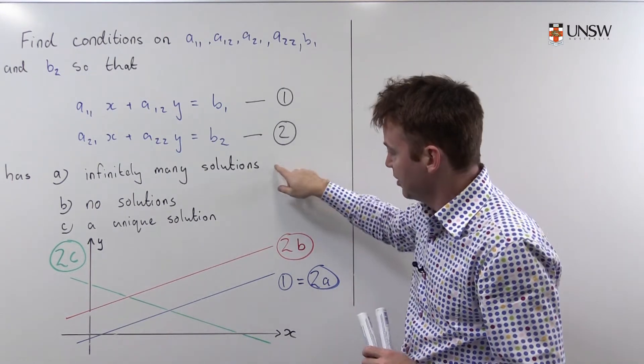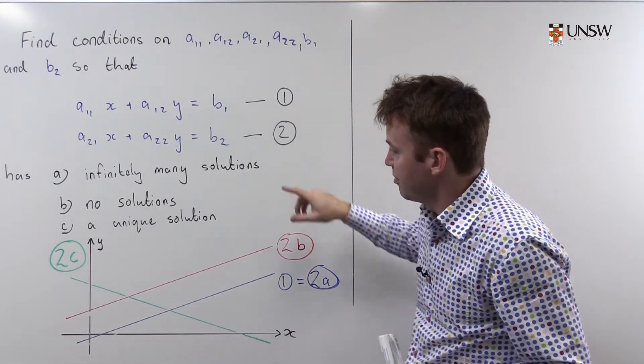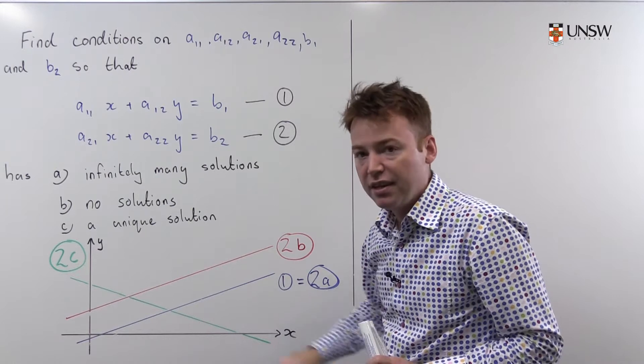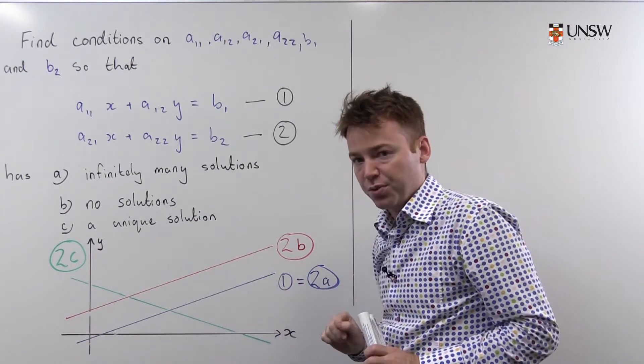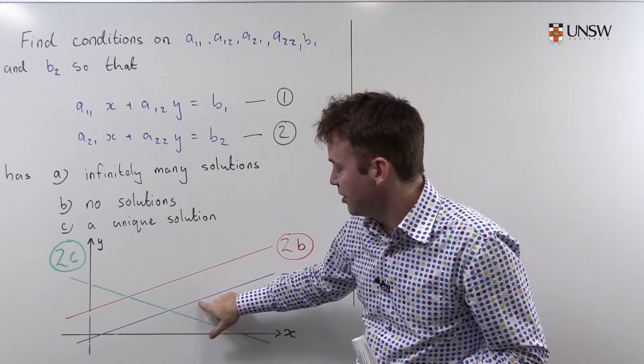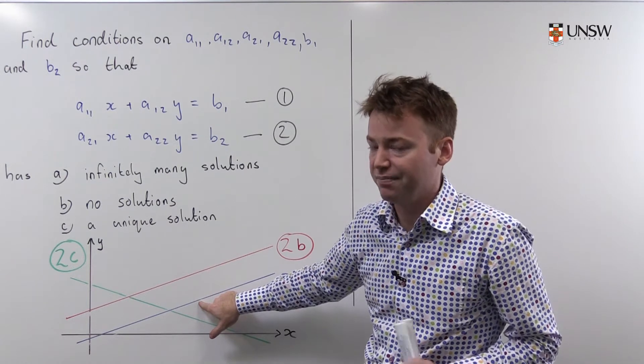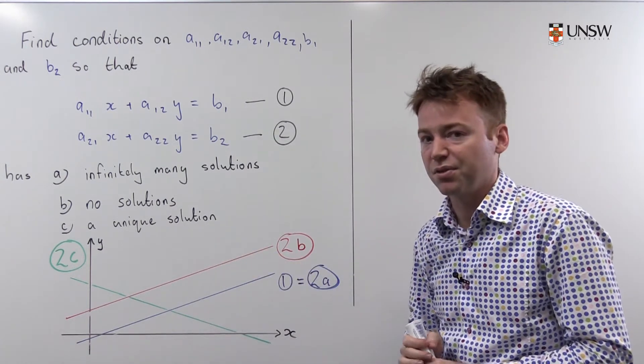First of all let's establish what these three scenarios actually look like. The first scenario is what happens if you take the blue line as equation one and the blue line again as equation two. In this case every possible x and y value on the blue line, the first line, is simultaneously also on the second line. So you end up with lots of solutions.